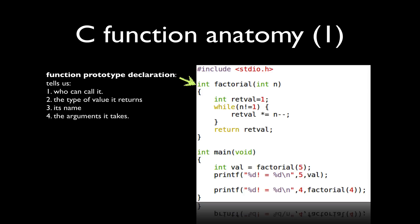So in this particular example, my function prototype tells me that the return type is int, the name of the function is factorial, and it takes a single argument of type int.